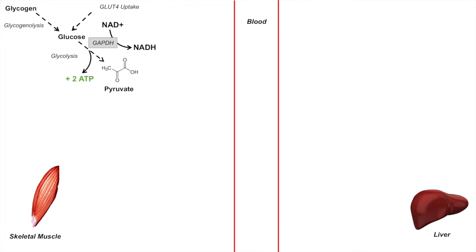In the process of glycolysis, the cell acquires two ATP. Using the enzyme glyceraldehyde 3-phosphate dehydrogenase, or GAPDH, NAD+ is reduced to NADH — giving two NADH total, one per pyruvate produced. When oxygen is present, pyruvate can enter the mitochondria and be processed through the tricarboxylic acid cycle, generating anywhere from 32 to 38 ATP.